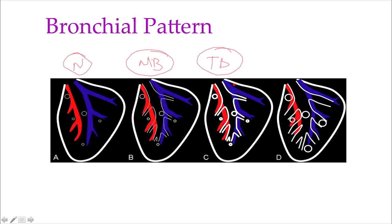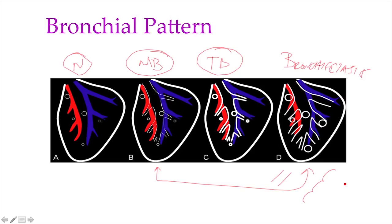We can also have bronchiectasis, in which case the bronchi don't taper towards the periphery. Comparing mineralized bronchi — where we can see the bronchial walls — with bronchiectasis: in bronchiectasis the bronchi appear to stay parallel or become saccular, while in normal bronchi they become thinner towards the periphery. When we see bronchial thickening, we think abnormal bronchial pattern; when we see mineralized bronchi with thin walls, we consider it an age-related change.